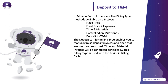The Deposit to Time and Material billing type enables you to manually raise deposit invoices. Once that amount has been used, time and material invoices will be generated periodically. This billing type is used with a periodic billing cycle. For more information on the periodic billing cycle, check out the training video on periodic billing.